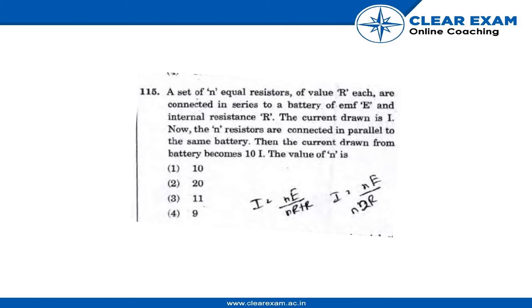So in this question, a set of N equal resistors of value R each are connected in series to a battery of EMF E and internal resistance R. The current drawn is I. Now the N resistors are connected in parallel to the same battery, then the current drawn from the battery becomes 10I. So the value of N is: